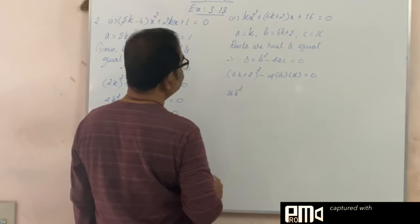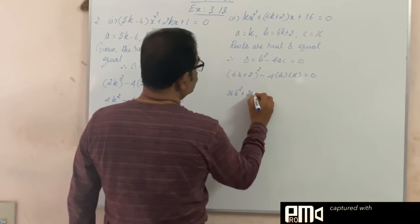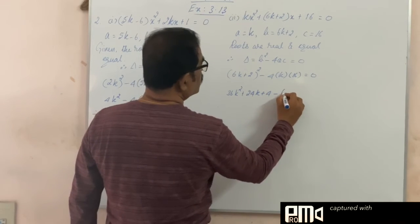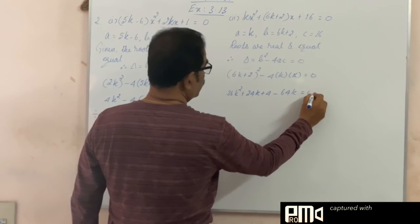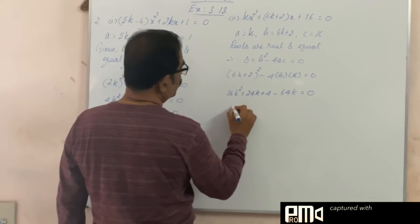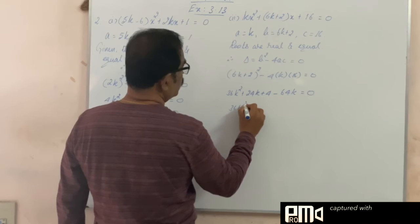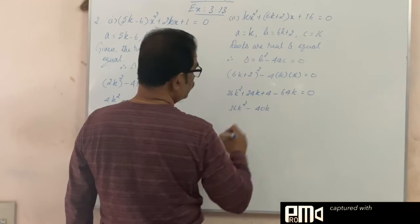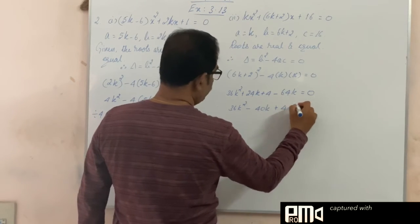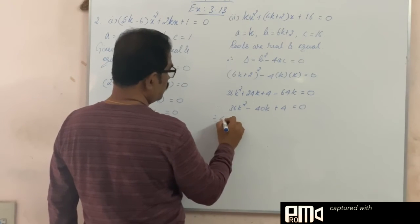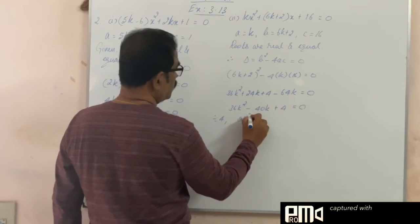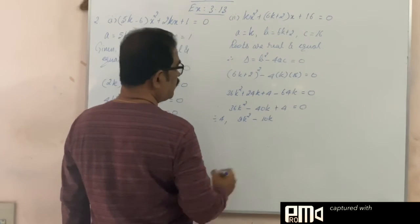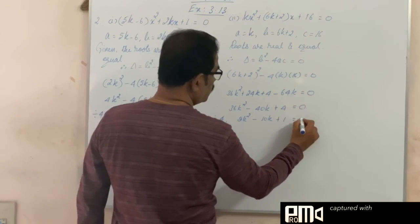36k square plus 24k plus 4 minus 64k. So, 36k square, 24k minus 64k minus 40k plus 4, divide by 4, 9k square minus 10k plus 1 is equal to 0.